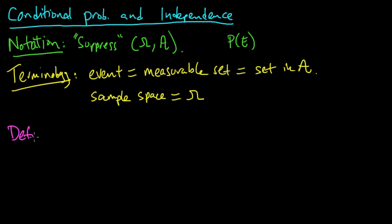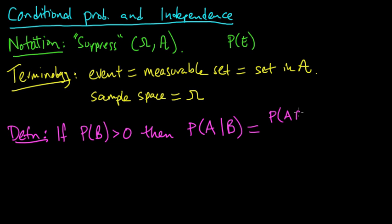So now we're ready to begin with conditional probability. If the probability of B is positive, not zero, then we define the probability of A given B to be the probability of the intersection A intersect B divided by the probability of B. And this is called the conditional probability of A given B. That's the definition of this notation.